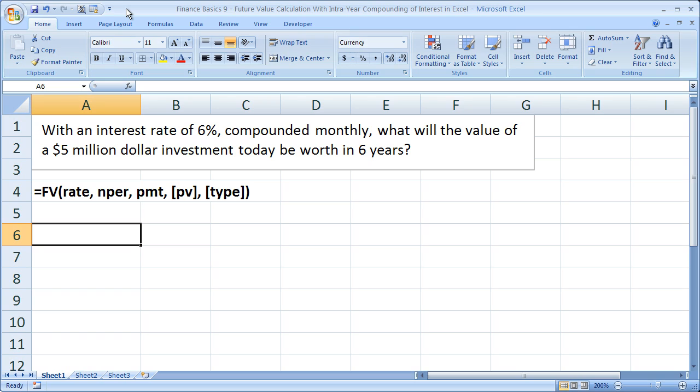In this example, the interest will be compounded monthly. Let me read this problem for you. With an interest rate of 6% compounded monthly—that's the most important part, monthly—what will the value of a $5 million investment today be worth in 6 years?